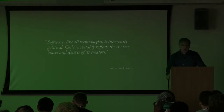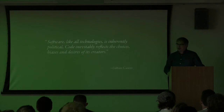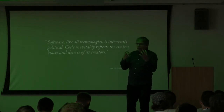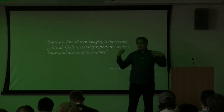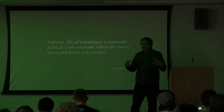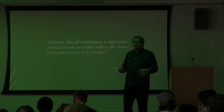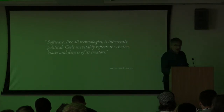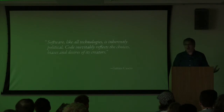Software, like all technologies, is inherently political. Code inevitably reflects the choices, biases, and desires of its creators. We talk about opinionated software, but the truth is all software is opinionated to some degree. Once you understand that, you're looking for technologies that match your own philosophy. This is how you get one group of developers saying a framework sucks and another saying it rocks — and they're both right and both wrong, because it's entirely subjective. If you find a technology matching your philosophy, it's an accelerant. If you're using a tool that doesn't match your assumptions, you'll be butting heads with it the whole time.